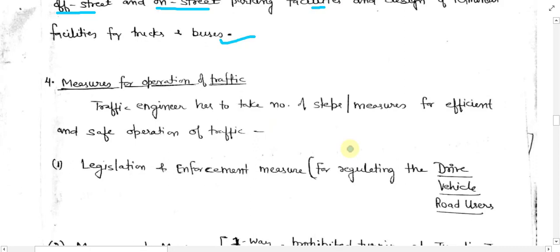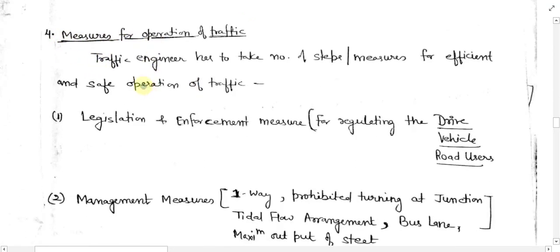The fourth job of the traffic engineer is measures for operation of traffic. The traffic engineer has to take a number of steps and measures for efficient and safe operations. These steps and measures include legislation and enforcement measures for regulating drivers, vehicles, and road users.